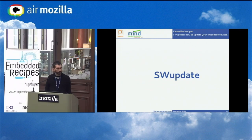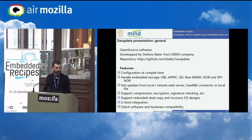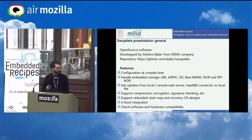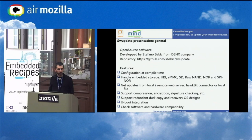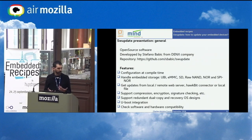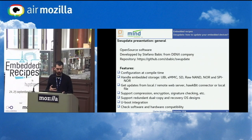SWUpdate is an open source software developed by Stefano Babic from Denx — the company that also develops U-Boot. It can be configured at compile time, like the kernel or BusyBox, to reduce binary size and select only needed features. For embedded contexts, it handles many storage types: SD card, eMMC, NAND flash, NOR flash, and UBI volumes — so you don't have to manage them manually, just respect the API and configuration.